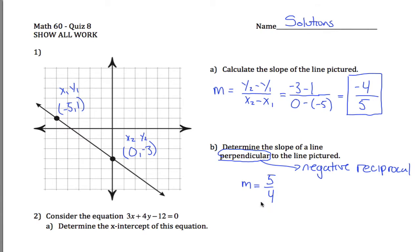So positive 4 fifths, its reciprocal is positive 5 fourths. In other words, change the sign, flip the fraction upside down, and what you have is the slope of the line perpendicular to this guy. I guess I should put that in a box because that's my final answer.